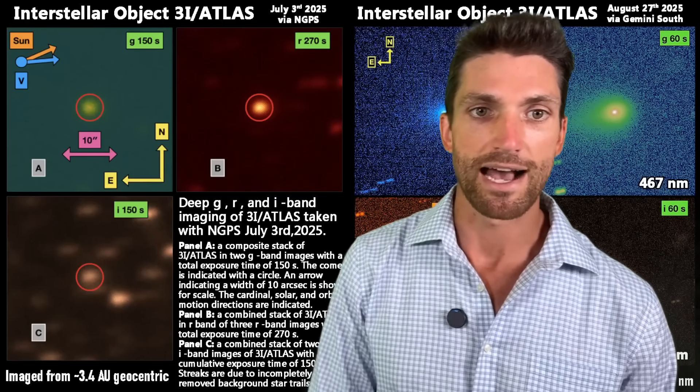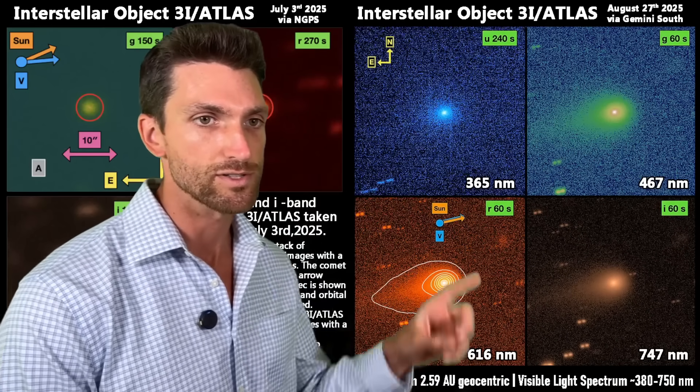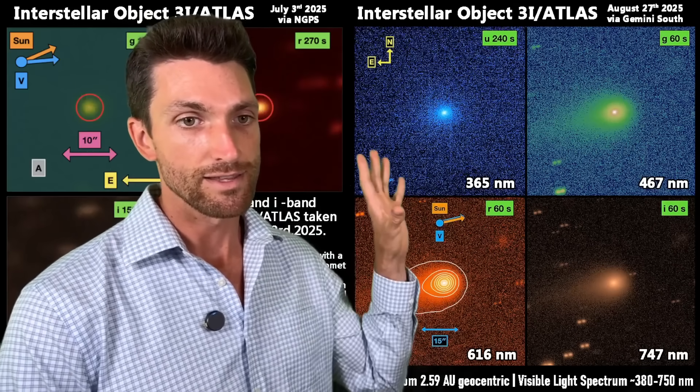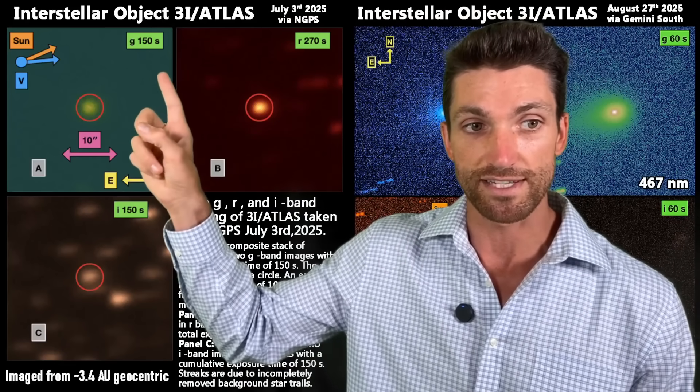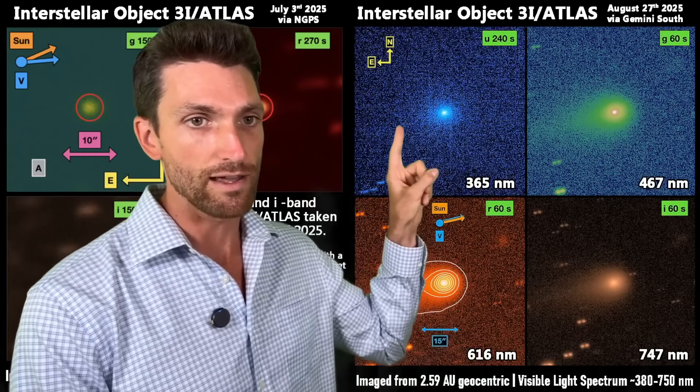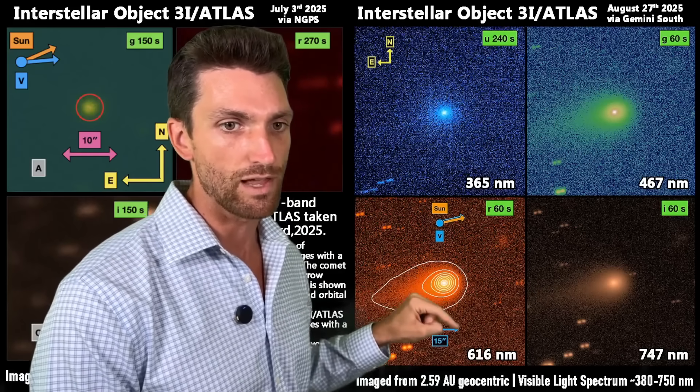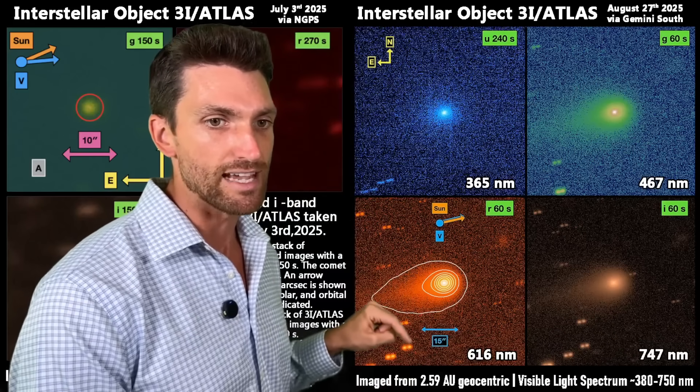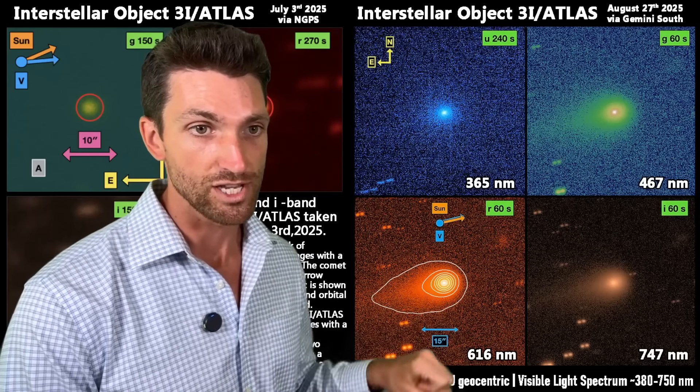Well, some time has passed and now we have new imagery from August 27th. And this is via Gemini South, whereas this July 3rd imagery is from NGPS. And we have the same optical bands here, though the exposure times are different. For example, this is 150 seconds right there. This one there is only 60 seconds, but we have our ultraviolet band, our green, our red, our infrared. We see our nanometer wavelengths of light right there. The visible light spectrum is 380 to 750 nanometers. And this is image from 2.59 astronomical units from Earth. So again, geocentric.